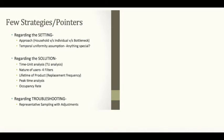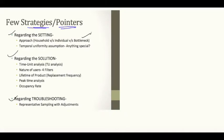This is the third video in the guesstimate approach. Till now we have seen the types of guesstimates, the four filters, and the different elements in a guesstimate problem. Now let's see a few more strategies and pointers. I've divided these into three types of situations: regarding the setting, regarding the solution, and regarding troubleshooting. Regarding the setting, remember the point about supply and demand.